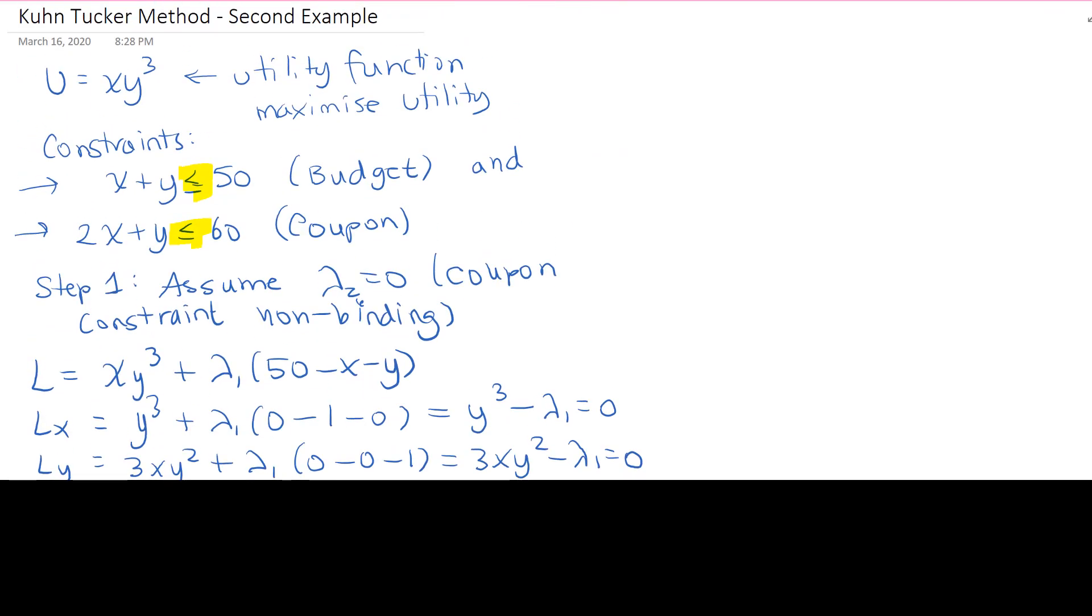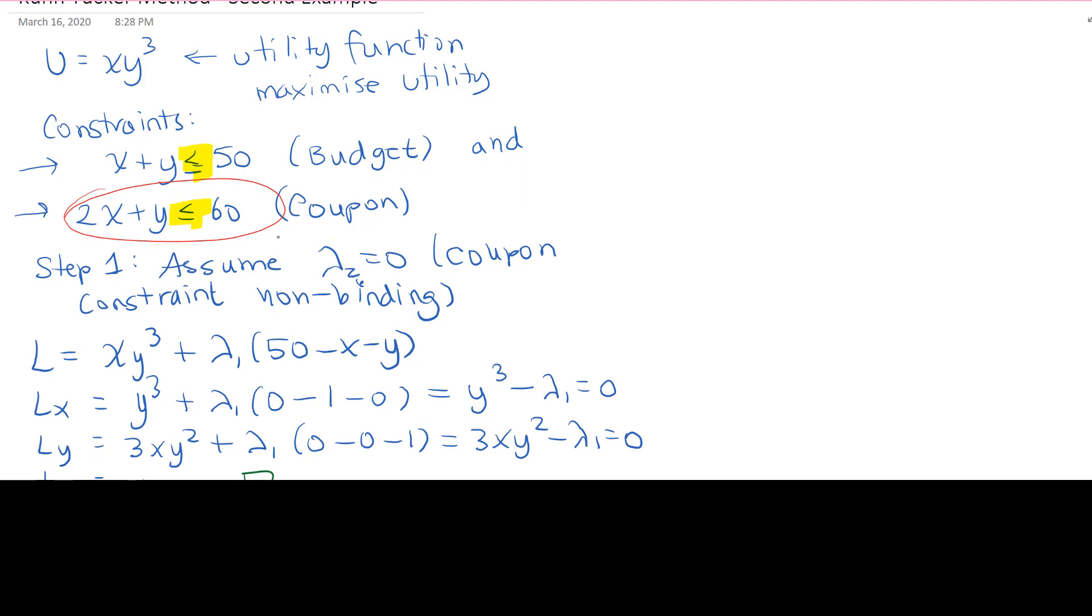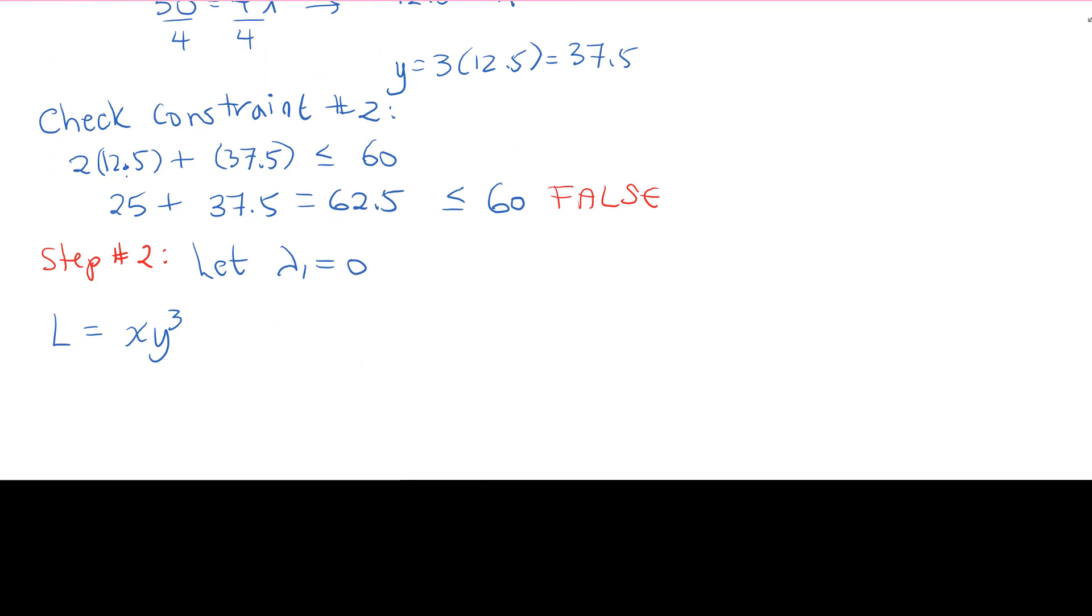So it's the U, which is xy cubed, plus lambda 1 times constraint 1, plus lambda 2 times constraint 2. Where we're now working with constraint 2, which is the 2x plus y less than or equal to 60, which becomes 60 minus 2x minus y. So our new Lagrange function is L equals to x times y cubed plus lambda 2, 60 minus 2x minus y.